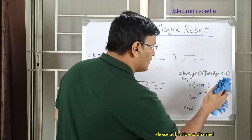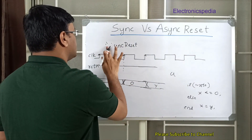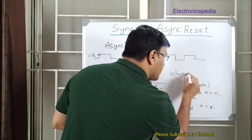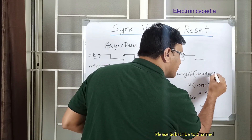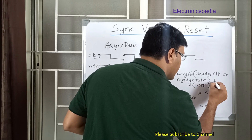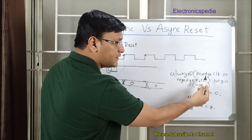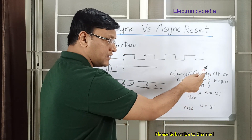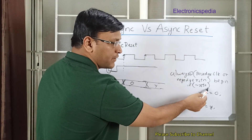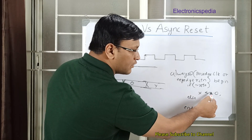Now let's look at asynchronous reset. The Verilog code is: always at posedge of clock or negedge of reset_n, begin — if reset_n is low, initialize x to 0, else x equals y. In the sensitivity list we now have both posedge of clock and negedge of reset_n. Either event triggers the block. Reset is given higher priority than the clock, so whenever negedge of reset occurs, x is immediately initialized to 0.